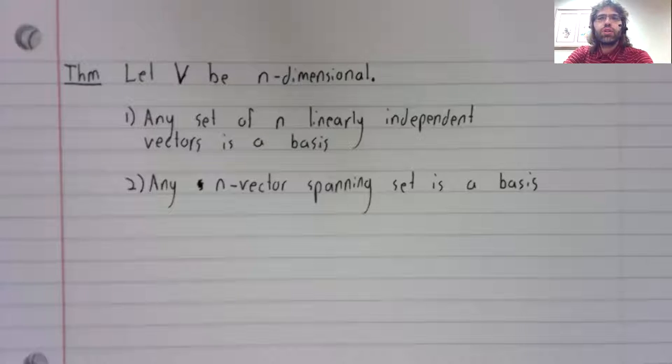In the sense that being a basis requires two different properties to be satisfied, and you have to show that both those properties are satisfied. However, if you know that you have the correct number of vectors, it's easier.